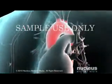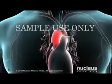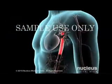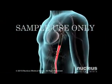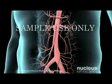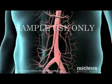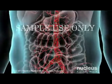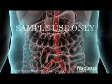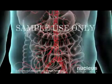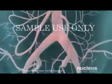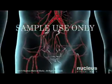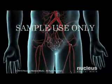The aorta is divided into four parts: the ascending aorta, aortic arch, thoracic aorta, and the abdominal aorta. The abdominal aorta is the last and largest section of the aorta. It supplies blood to the lower regions of your body, including the organs in the abdomen and pelvis. The abdominal aorta ends around navel level, where it splits into the two iliac arteries that carry blood to the legs.